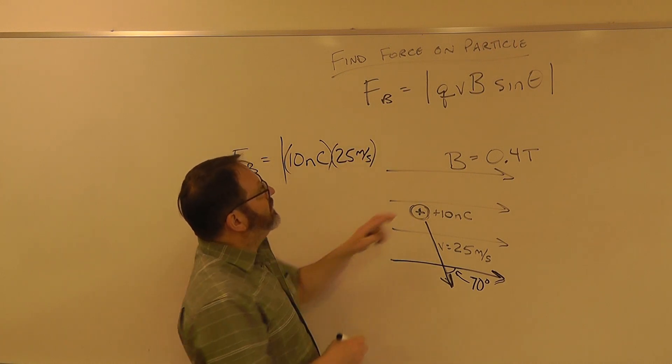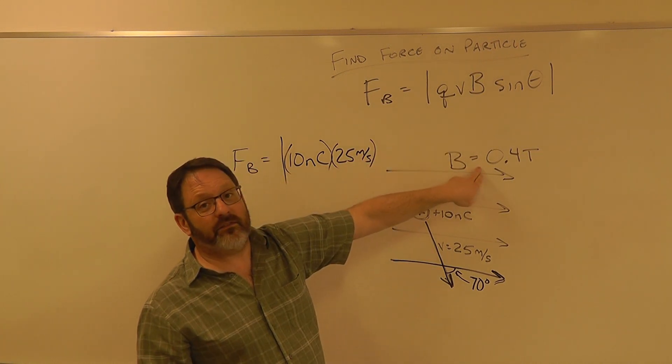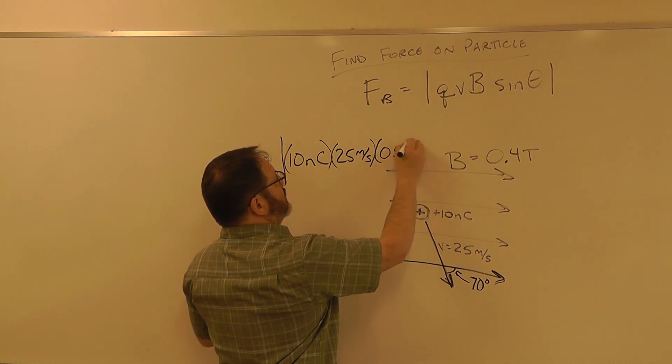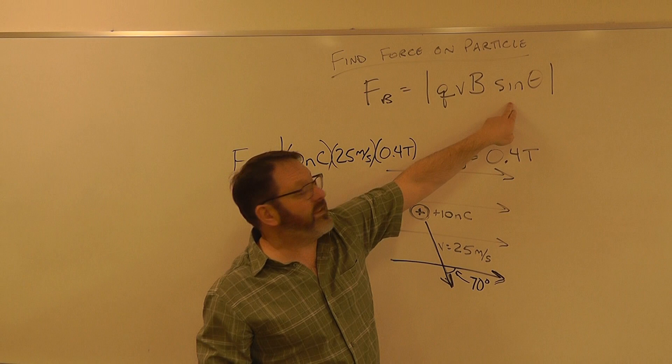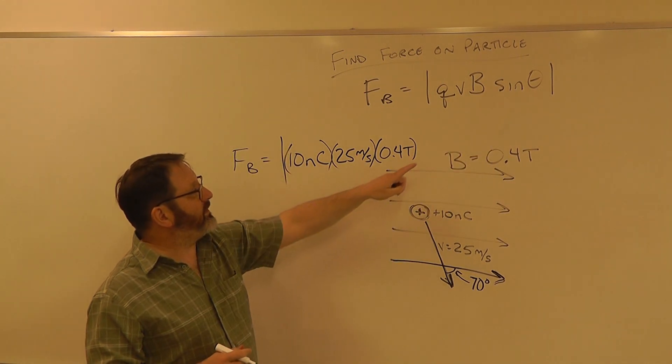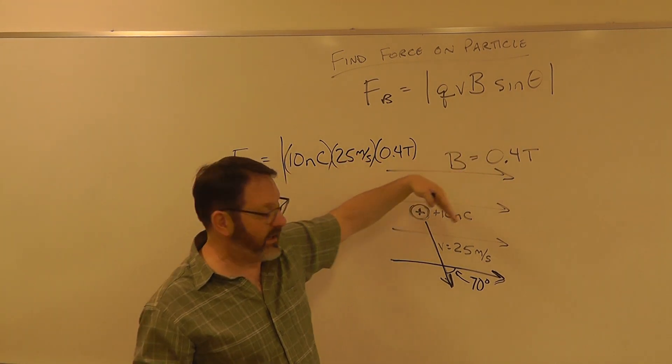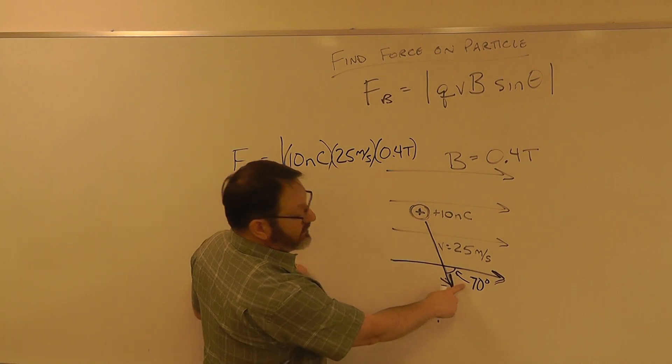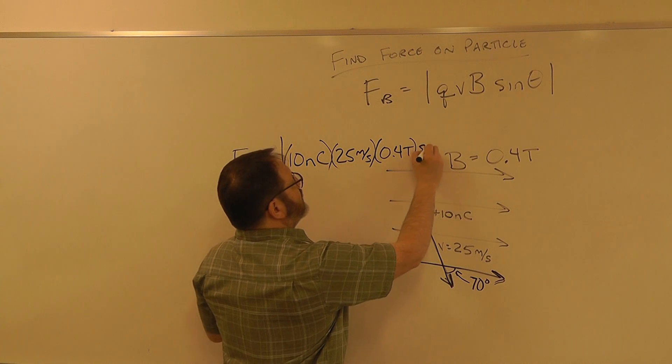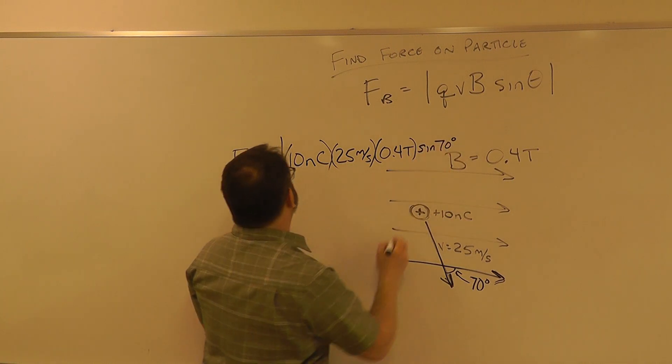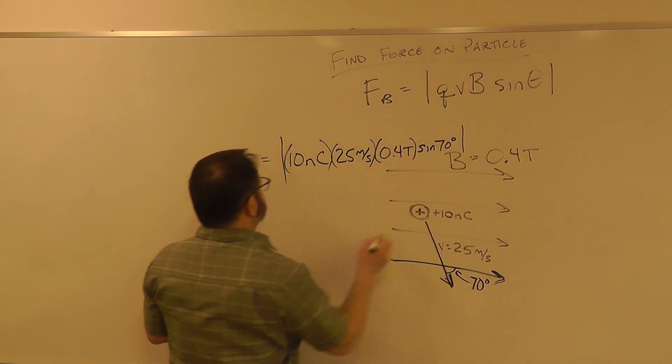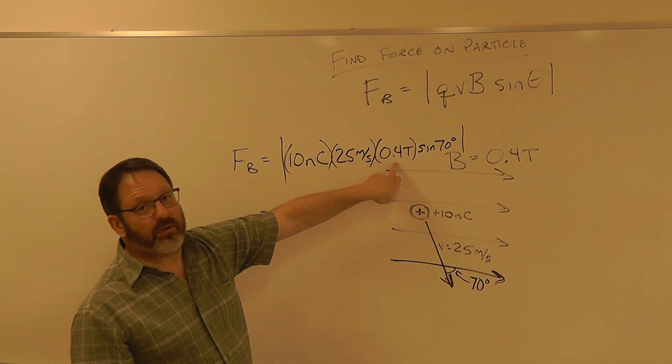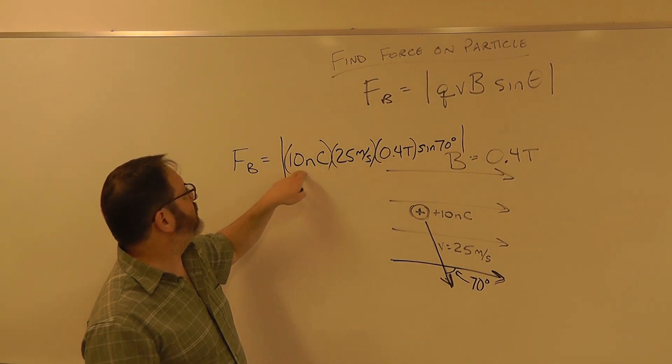B magnetic field here is given as 0.4 Tesla times sine of theta. Theta is the angle between the B field and the velocity vector, so the way I've drawn it here there's an angle right here, 70 degrees times sine 70 degrees. So that is 10 times 25 times 0.4, that's 100.